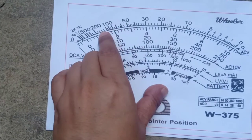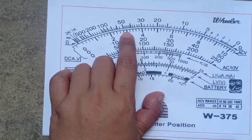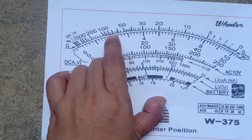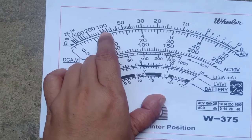50 to 100, ang bilang naman kada lines niyan ay 5. So, 50, 55, 60, 65, 70, 75, 80, 85, 90, 95, 100.